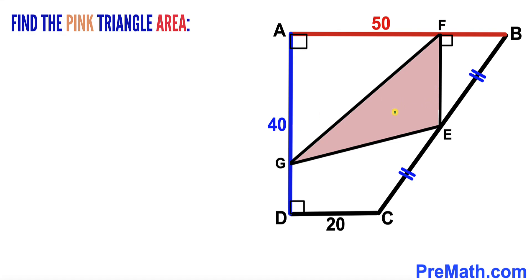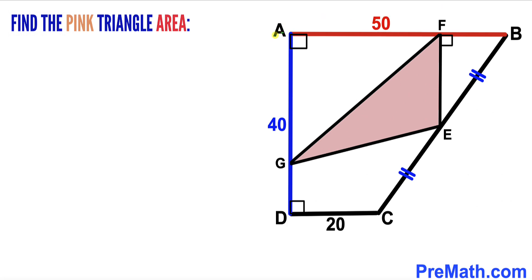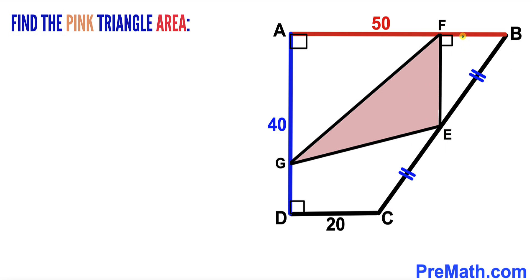Welcome to Pre-Math. In this video we have a pink triangle EFG fully confined in a trapezoid ABCD, such that side length AB is 50 units, AD is 40 units, and side length CD is 20 units. Furthermore, segment EB is equal to segment EC, and the angles at E, F, and G are each 90 degrees. Our task is to calculate the area of this pink triangle EFG.